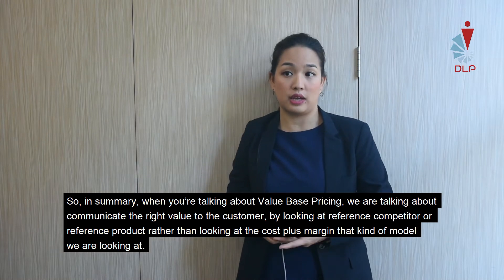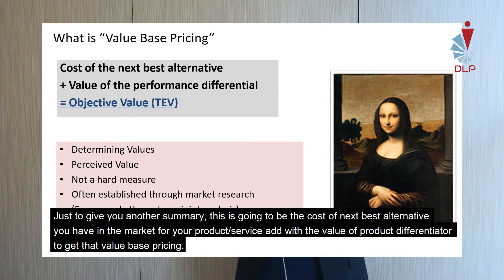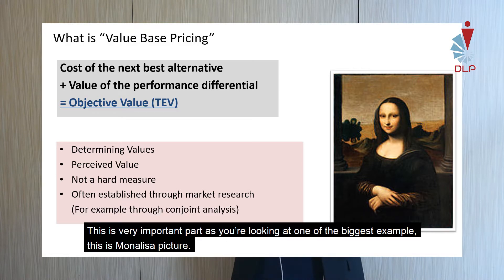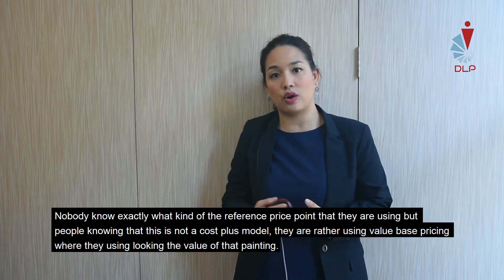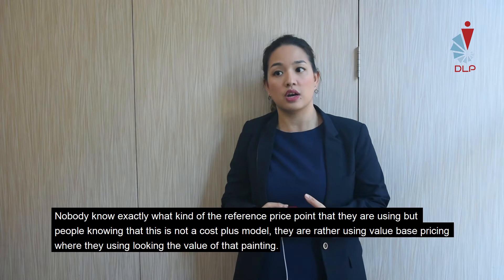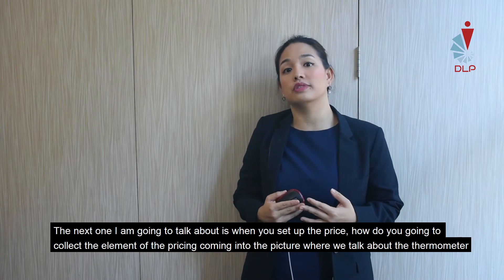In summary, value-based pricing is: cost of next best alternative in the market for your product, plus the value of the performance differentiator, to arrive at the value-based price. A great example is the Mona Lisa — nobody knows exactly what reference price they are using, but people know it's not a cost-plus model. They are using a pricing approach focused entirely on the value of the painting.